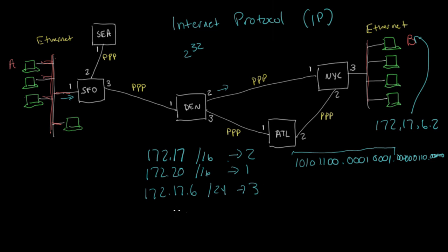Or maybe we also have a route for 172.17.6/24, which says go out interface 3. And maybe another route that says 172.17.8/24, go out interface 3 as well. So maybe there's some more entries here.